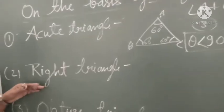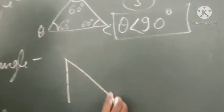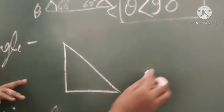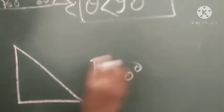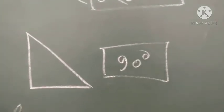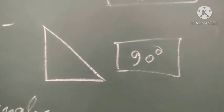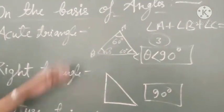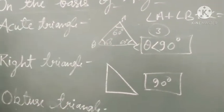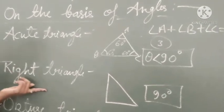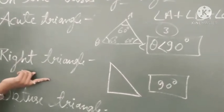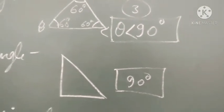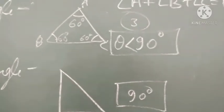Next is the right triangle. A right angle is 90 degrees — an angle that is exactly 90 degrees is called a right angle. Since we are classifying on the basis of angles, your concept of angles must be clear. So in a right triangle, one angle must be 90 degrees.